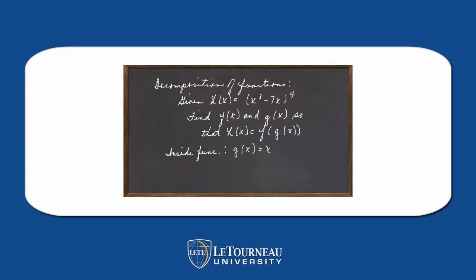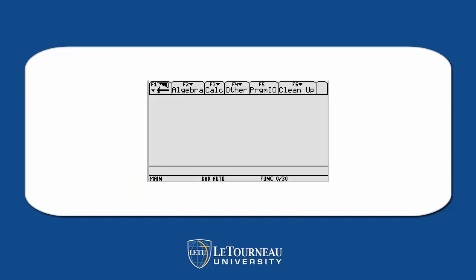Now let's decompose a function. Our function is x cubed minus 7x to the 4th. Notice that we can make it f of g of x by letting g of x be x cubed minus 7x and f of x equaling that expression to the 4th. Need to do that a lot also when you're working with something like the chain rule in calculus.